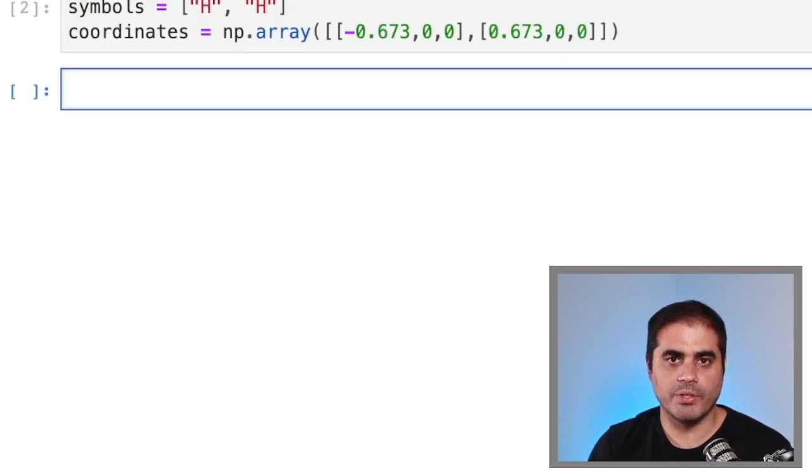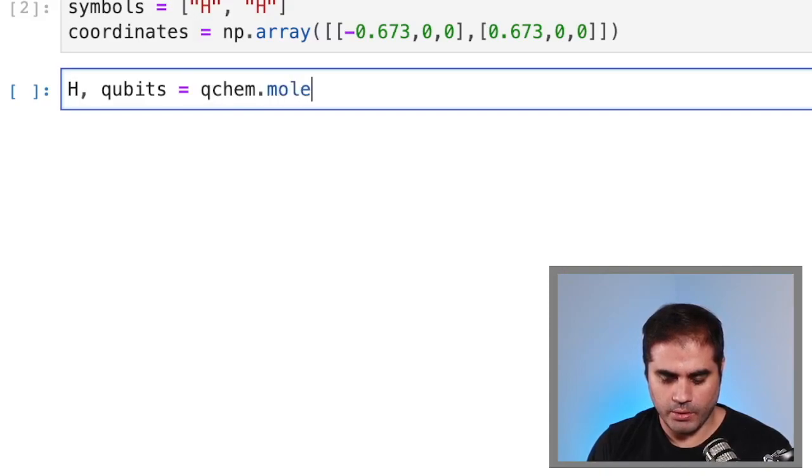A nice thing about the qchem library is that it allows us to calculate the molecular Hamiltonian under the hood. So let's define H for our Hamiltonian and qubits for the number of qubits that we will be needing for that Hamiltonian. So all that we need to do is qchem.molecular_Hamiltonian of the symbols and coordinates that we defined before.